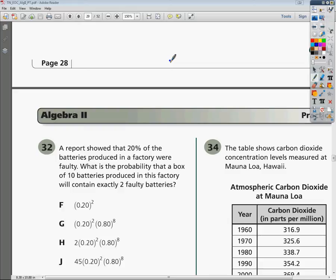Alright, this is the Practice Algebra 2 ELC question number 32, and the question says: A report showed that 20% of the batteries produced in a factory were faulty. What is the probability that a box of 10 batteries produced in this factory will contain exactly 2 faulty batteries?